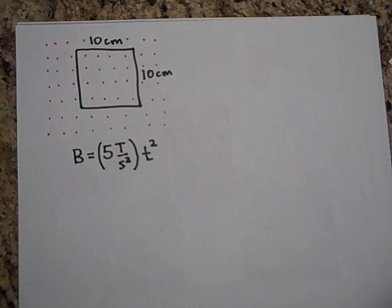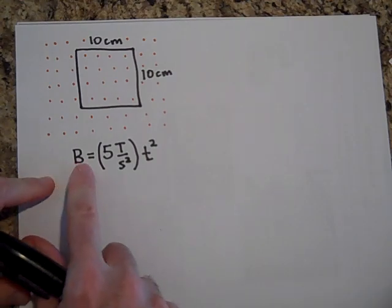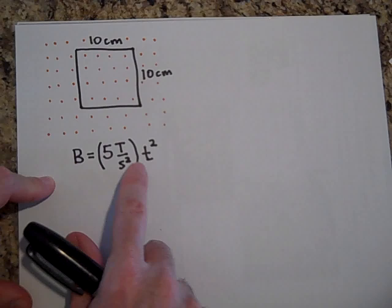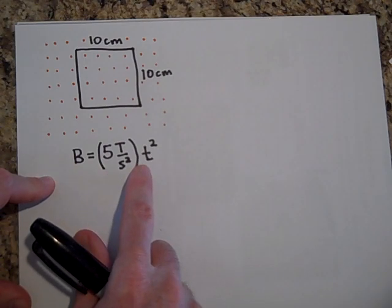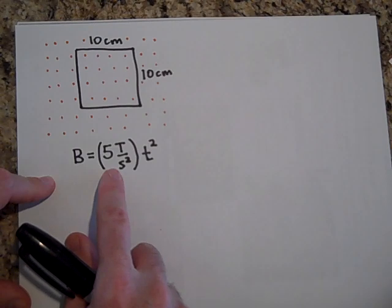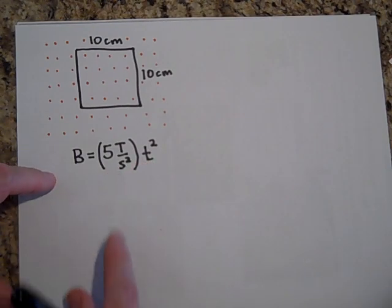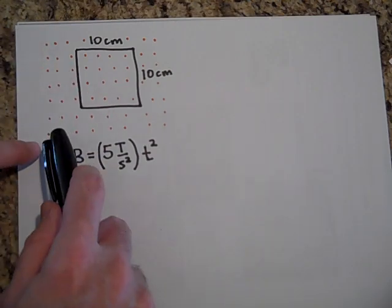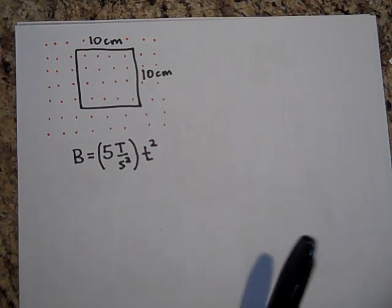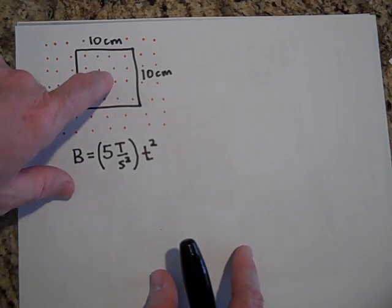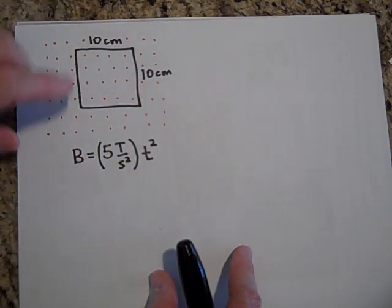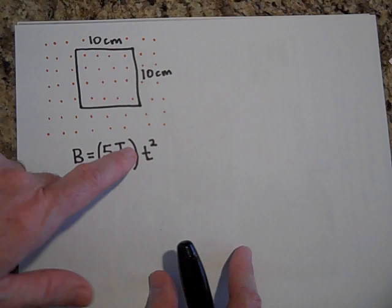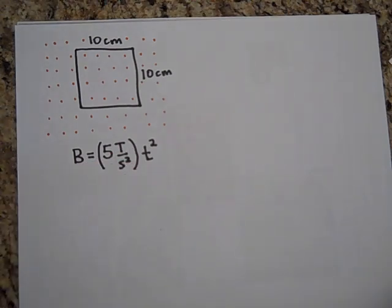Now I want to make a point here that's not a small point. This is actually a pretty big point. And that is that this field, while it's not constant, it's changing with time. See, at t equals zero, there is no field. But at t equals one second, if I put in one there, I get five Teslas. And if I put in two seconds, I get 20 Teslas. It's increasing pretty fast. So let me say that again, because this is no small point.